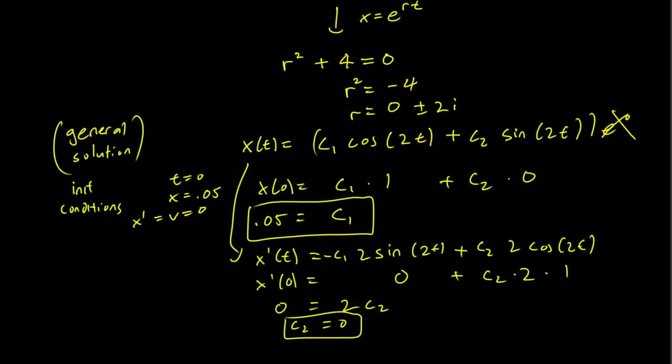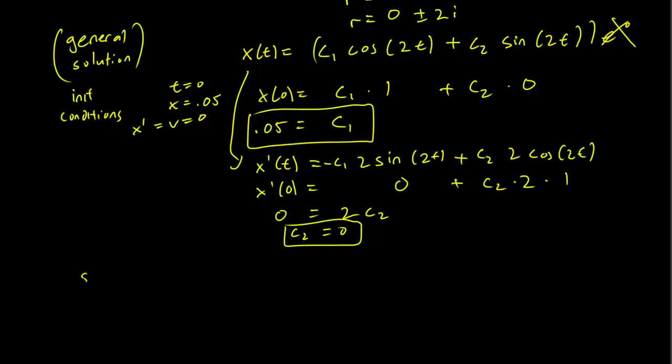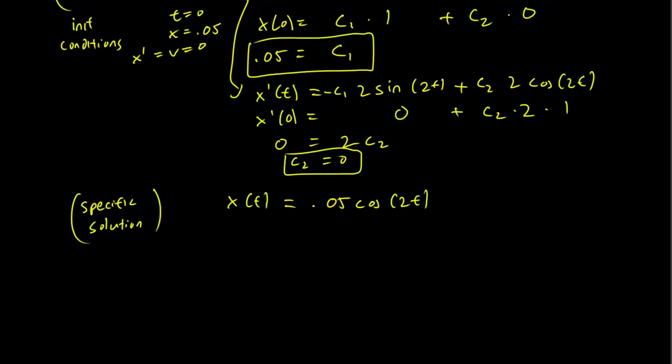So given that this was our general solution, our specific solution is going to be x(t) = 0.05 cos(2t).